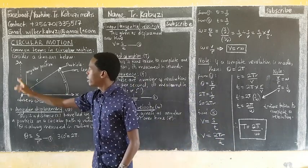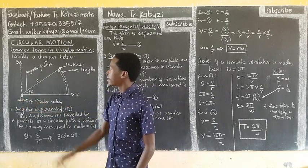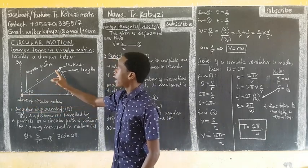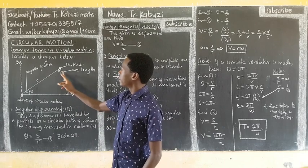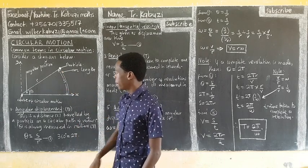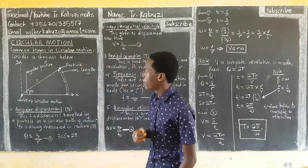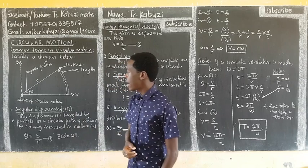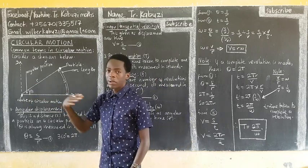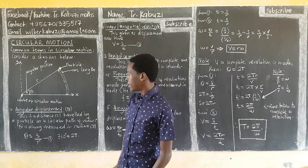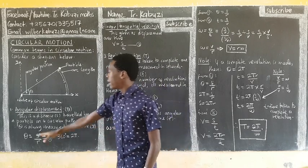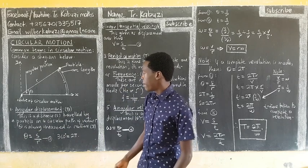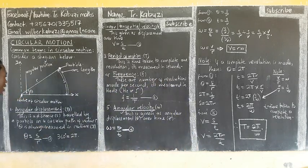For common terms in circular motion, consider this diagram. If this is our radius R, this is theta, and this is a path — the radius of the path from the center to the particle — then the displacement S is the distance traveled along the circular path by particle P. The center of the circular motion is at the origin. The angular displacement theta is measured from here to here, and S is the distance traveled by the particle in the circular path of radius R. Theta is always measured in radians.